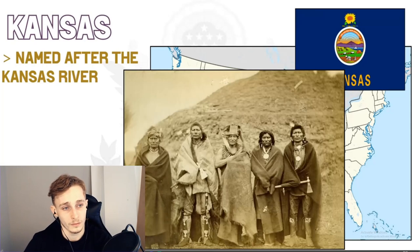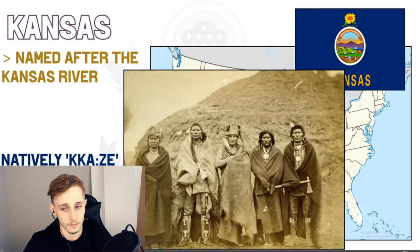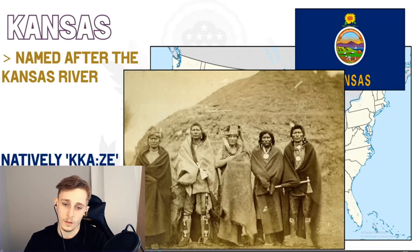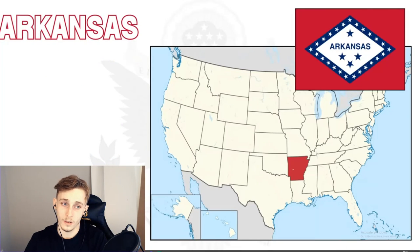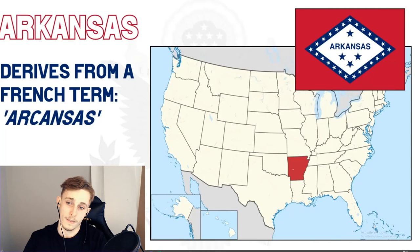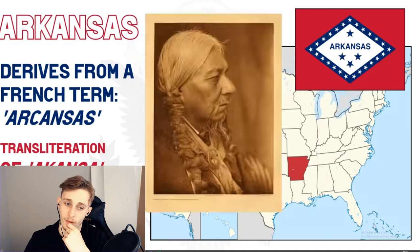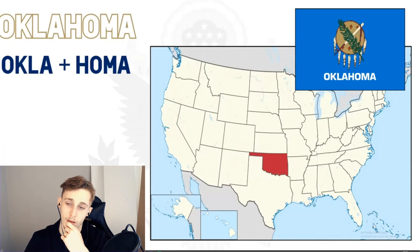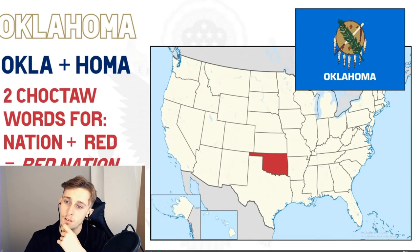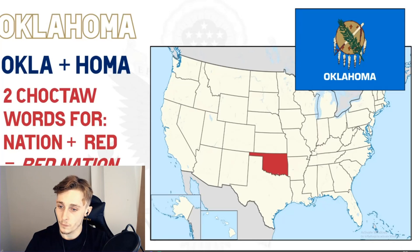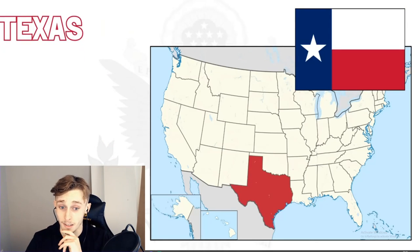Arkansas has a very similar name to Kansas. The name Arkansas was initially applied to the Arkansas River, and arrives from a French plural transliteration of 'Akansa,' an Algonquin term for the Quapaw people. 'Akansa' is likely also the root term for 'Kansa,' which led to the Kansas name. Oklahoma is the combination of two Choctaw words: 'okla' meaning 'tribe or nation' and 'homa' meaning 'red' — so 'red nation,' although a rough translation could also be 'Indian territory.'